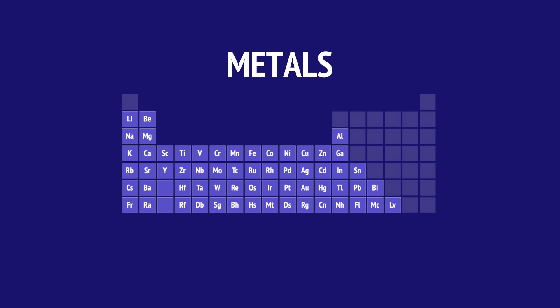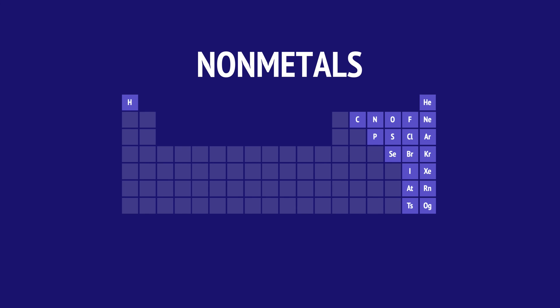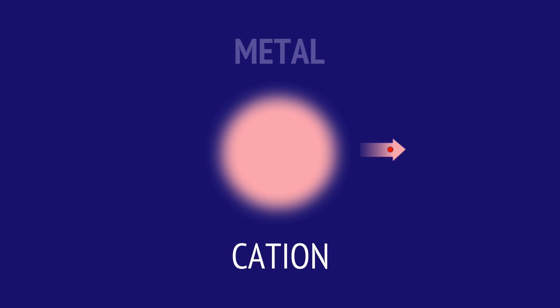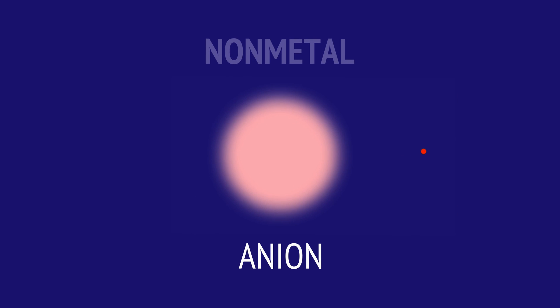In this video we've seen that ionic bonding occurs between metal cations and non-metal anions, with the cation formed by losing electrons and the anion by gaining these electrons.